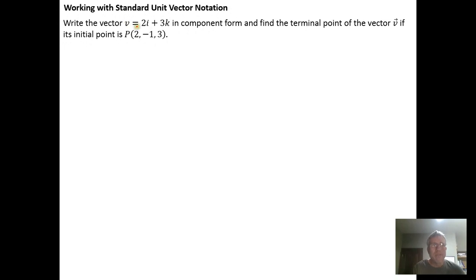So write the vector v equals 2i plus 3k in component form and then find the terminal point of the vector v if the initial point is p, the initial point p is the point (2, -1, 3).